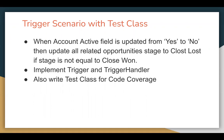Let's first understand the requirement and then I will demonstrate the implementation. The requirement says: when the account active field is updated from yes to no, then we need to update all related opportunity stages to closed lost, if the stage is not equal to closed won.